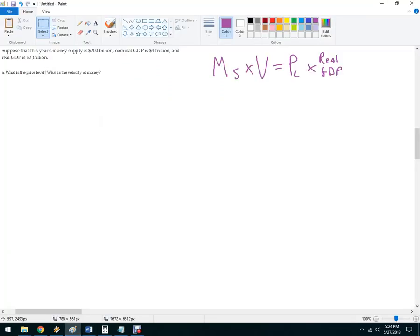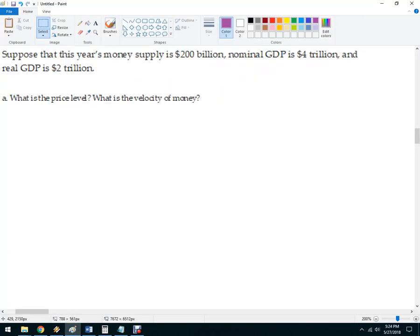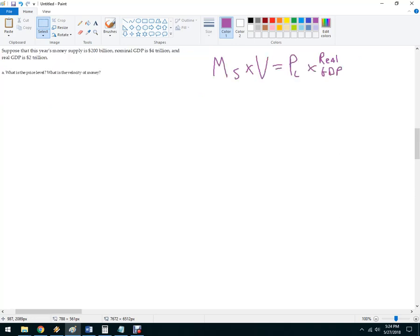Now, where did this come from? We've got a problem like this. Suppose that this year's money supply is 200 billion, nominal GDP is 4 trillion, and real GDP is 2 trillion. So one way to do this, since this is in billions, I'm going to convert both of these into trillions. So this is 4,000 billion, and this is 2,000 billion, because 1,000 billions is a trillion.